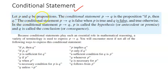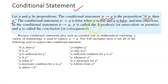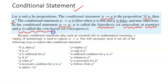Let p and q be two propositions. The conditional statement p implies q is the proposition 'if p then q.' The conditional statement p implies q is false when p is true and q is false, and true otherwise. Two things to note clearly: if I write p implies q, then p is called the hypothesis — we can also call it the antecedent or premise.